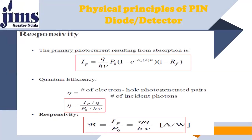As far as responsivity is concerned, that was already discussed in previous lectures. The question is: what is the mathematical model of the photocurrent created in the PIN photodetector? The equation of this photocurrent is: Q is the charge, H is Planck's constant, μ is the frequency of the photon incident on the detector, Ip is the photocurrent, and P0 is the total power incident on the intrinsic region of the PIN diode. This is the equation of the primary photocurrent resulting from absorption.